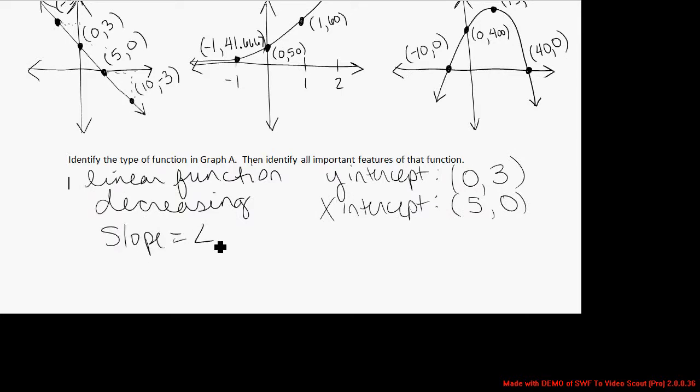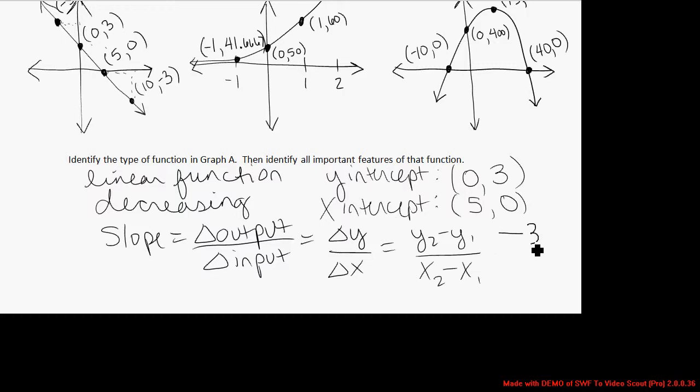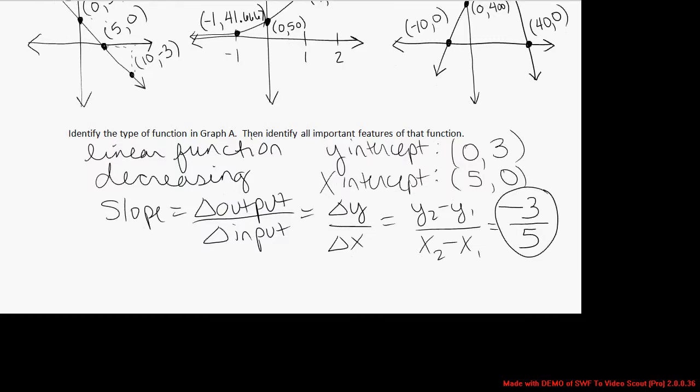Recall that the slope of a line is the change in the output divided by the change in the input. It's the change in y divided by the change in x. It's the second y-value minus first y-value divided by second x-value minus first x-value. And what we were just describing is that we were going down three every time we go over five. So the slope is negative three-fifths.